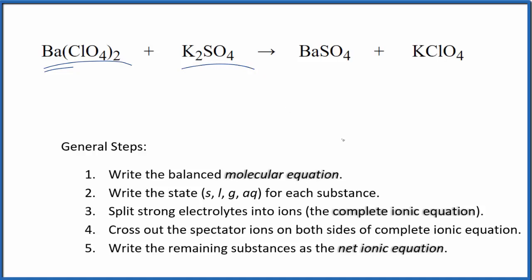So with net ionic equations, the first thing we need to do is balance the molecular equation. I can see that I have two of these perchlorate ions here and only one over here. So I'm going to put a 2 in front of the KClO4. That balances these perchlorates. We have two on each side.